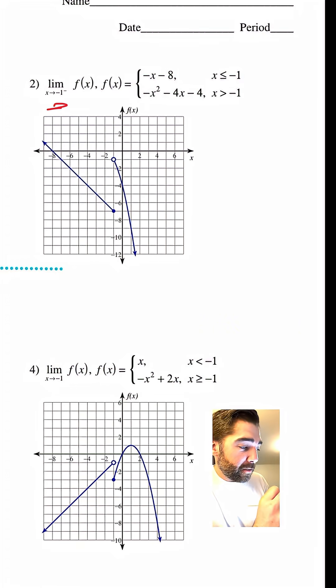Number 2. As the limit of the function, as x approaches negative 1 from the left. Well, here we go. You got to see it's a piecewise function. So we have negative 1 and negative 1. Great. Okay. So let's look at this graph.